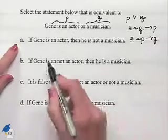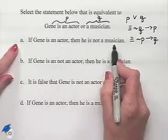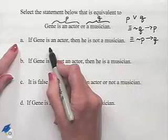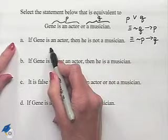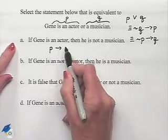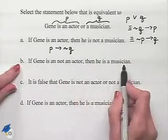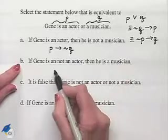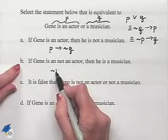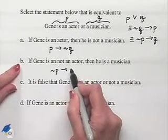If Gene is an actor then he is not a musician would be symbolically denoted as if P then not Q. If Gene is not an actor then he is a musician would be denoted if not P then Q.